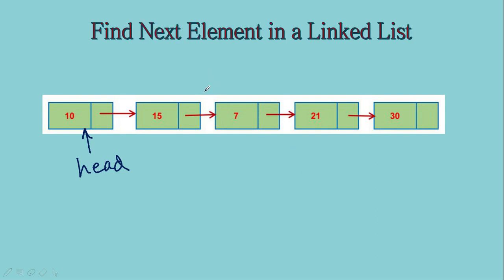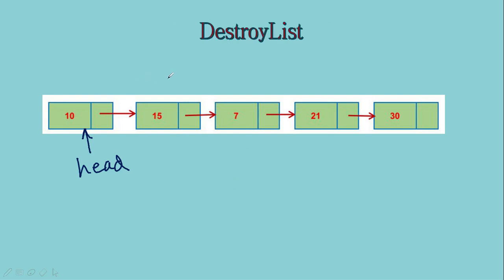Find the next element — similar case. When asking for the next element of 21, or even the next element of 30, I have to traverse the entire list. So the time taken depends on the number of elements and the time complexity will be big O of N. Destroying the list: when you want to destroy, you have to go node by node. Here also we have to traverse the entire list, so the time complexity will be big O of N.